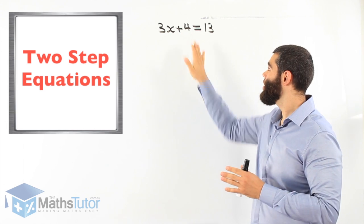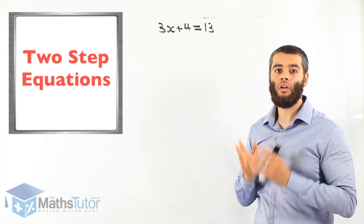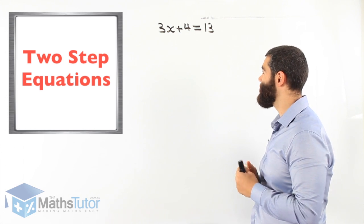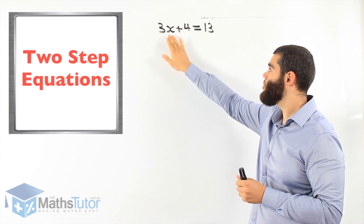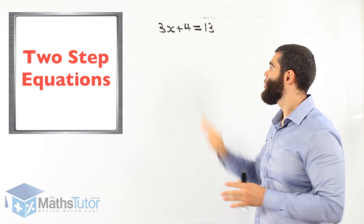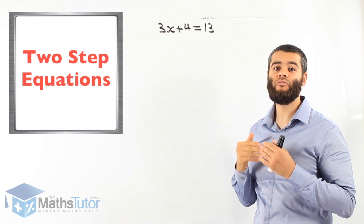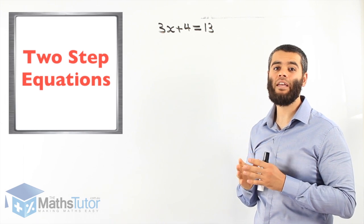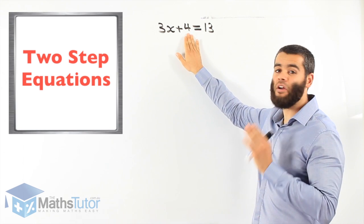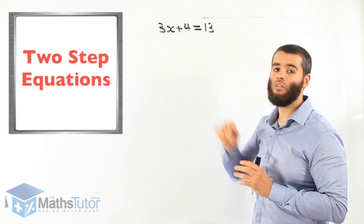Why is it two steps? Because we have to get rid of each of these numerals to leave x by itself. But the question is, which one do we get rid of first — the plus 4 or the 3? I like to think of it this way: when I look at the equation, I want to get rid of the one that is the furthest away from x. The furthest one away from x is 4, so we start with that one first, then move on to the 3.